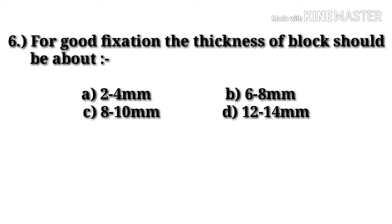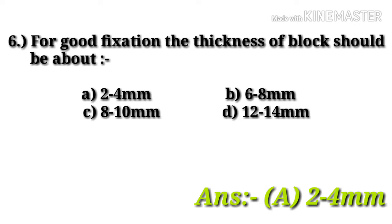Question number 6: for good fixation, the thickness of the block should be about — option A: 2 to 4 mm, option B: 6 to 8 mm, option C: 8 to 10 mm, option D: 12 to 14 mm. The thickness of block for good fixation is 2 to 4 mm; option A is correct.